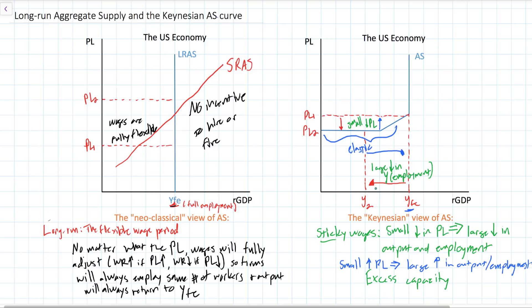They can do so without having to pay higher prices for resources, without having to raise wages, and without facing higher rents from landlords. If there is a lot of excess capacity in the economy — as there would be during a recession, with output well below the full employment level — firms can increase output without facing higher prices. Therefore, a nation can experience higher output and employment without seeing much higher inflation during the recovery phase of the business cycle.